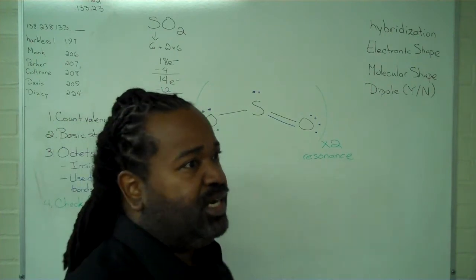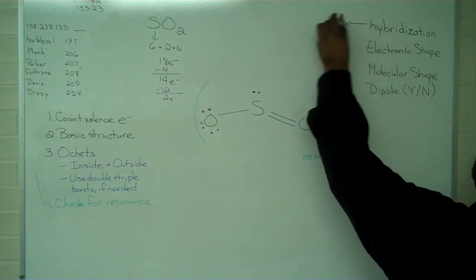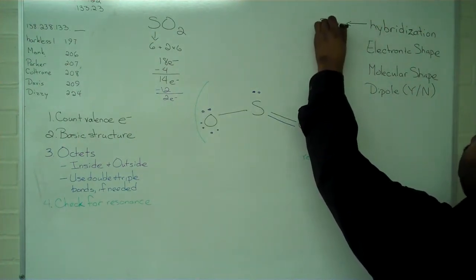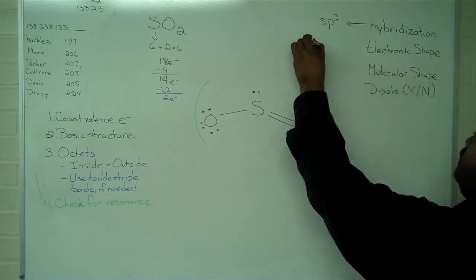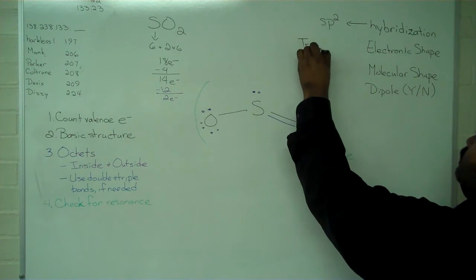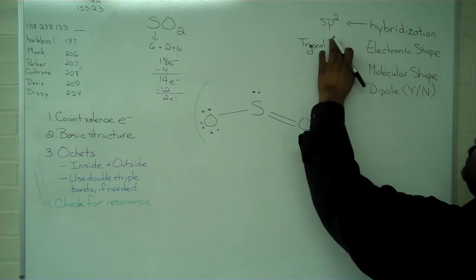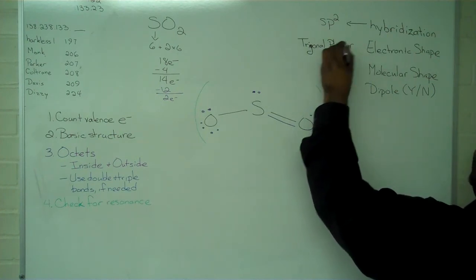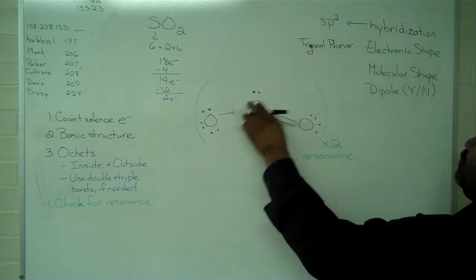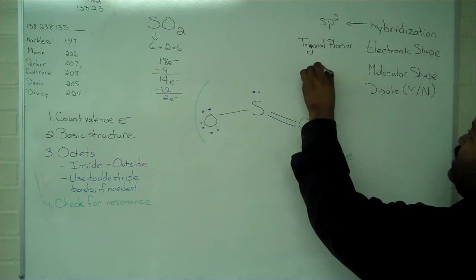One of which is a non-bonding pair. And so what we have then with the count being 3 groups is sp2 hybridization that immediately implies an electronic shape of a trigonal planar and a molecular shape because we have 1 non-bonding group of bent.